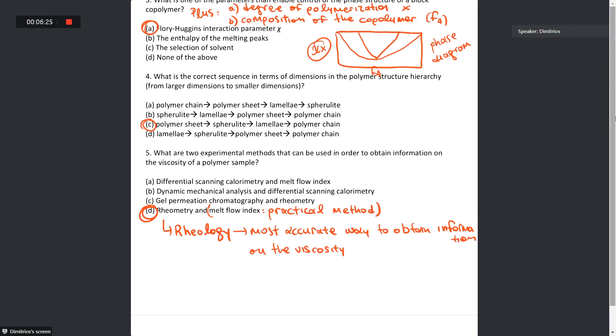And the melt flow index, you remember, is the most practical method. Can anyone tell me the relationship of the melt flow index with viscosity? Is the melt flow index related to the viscosity? Indeed, very well guys. It's inversely proportional, so the melt flow index is approximated to the inverse of the viscosity. So a high melt flow index means a low viscosity.